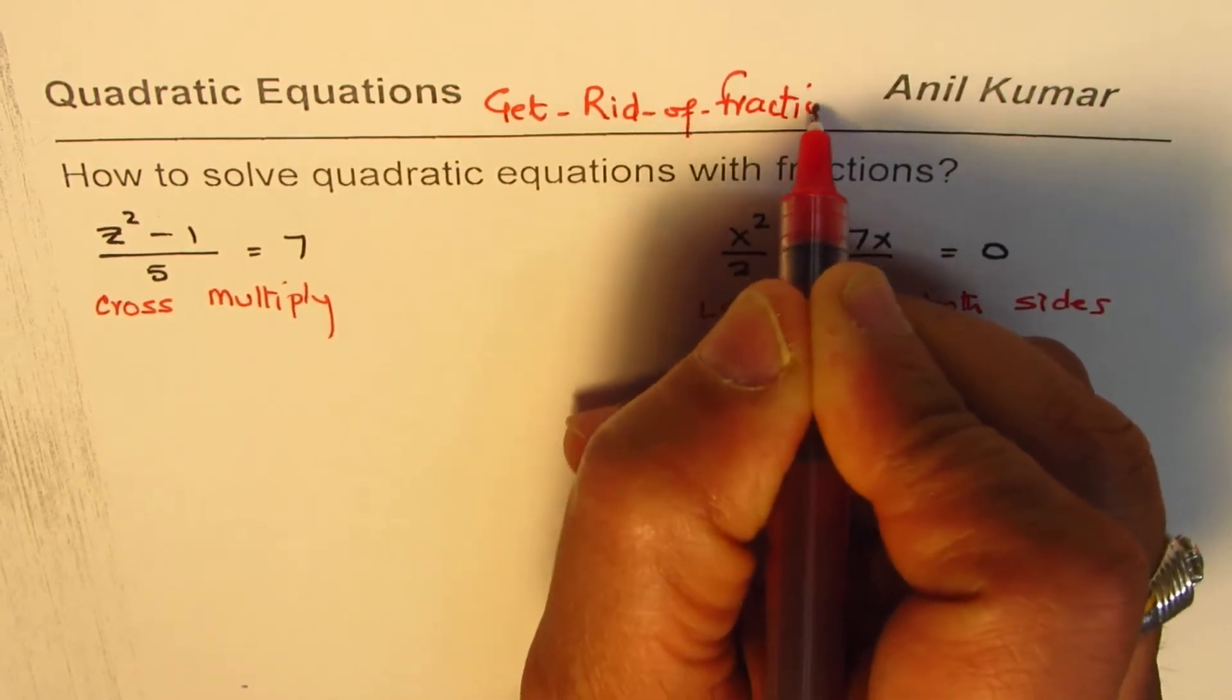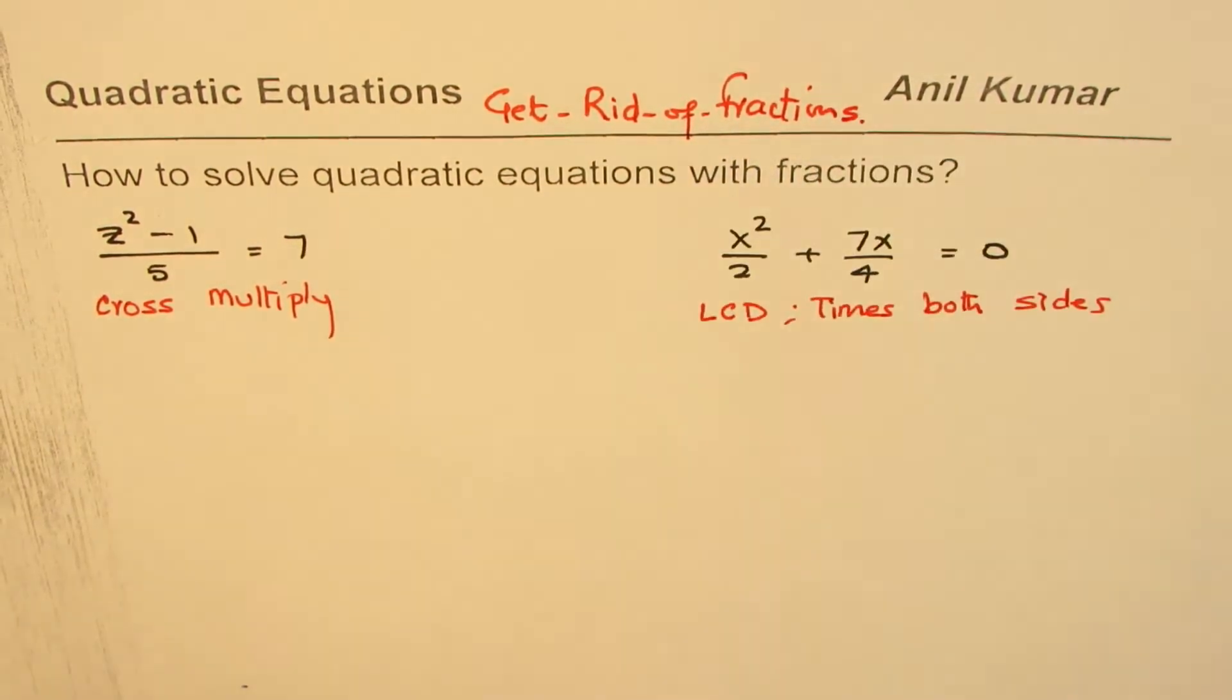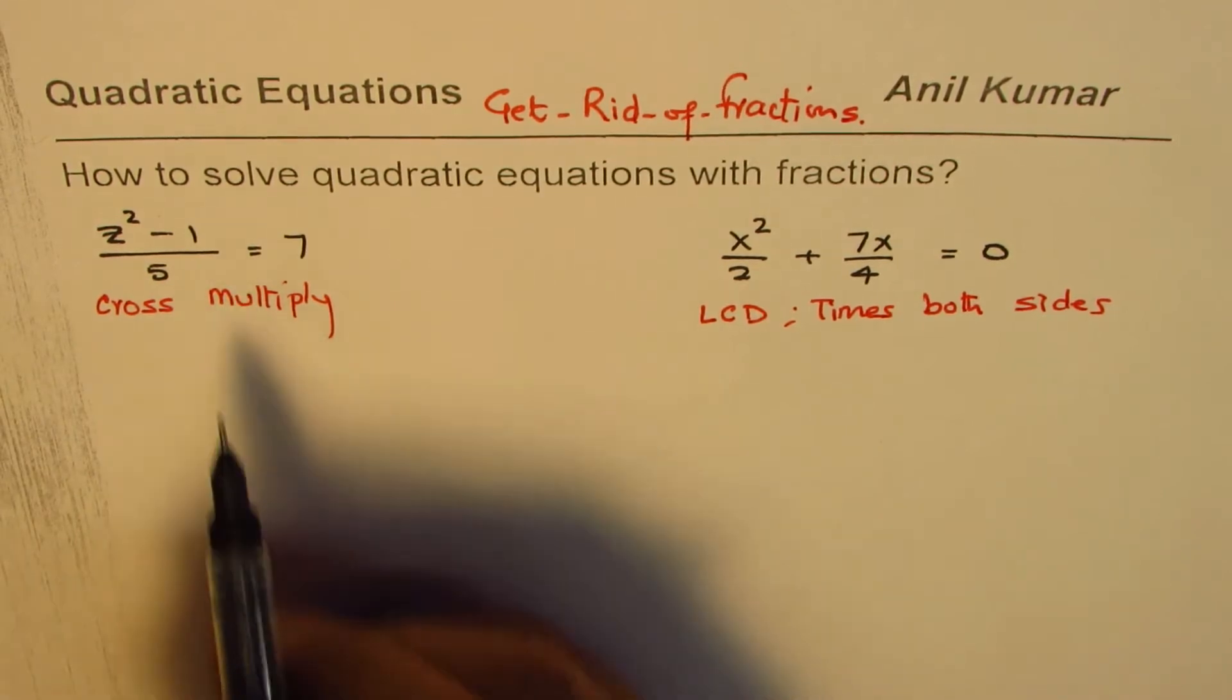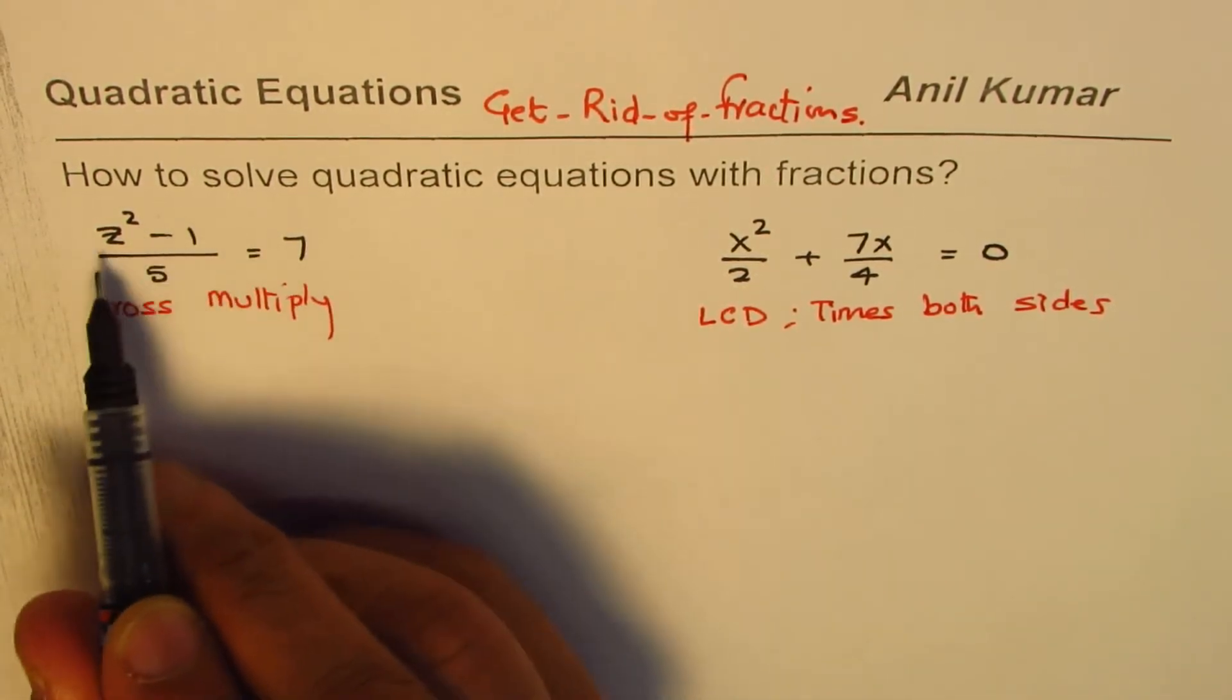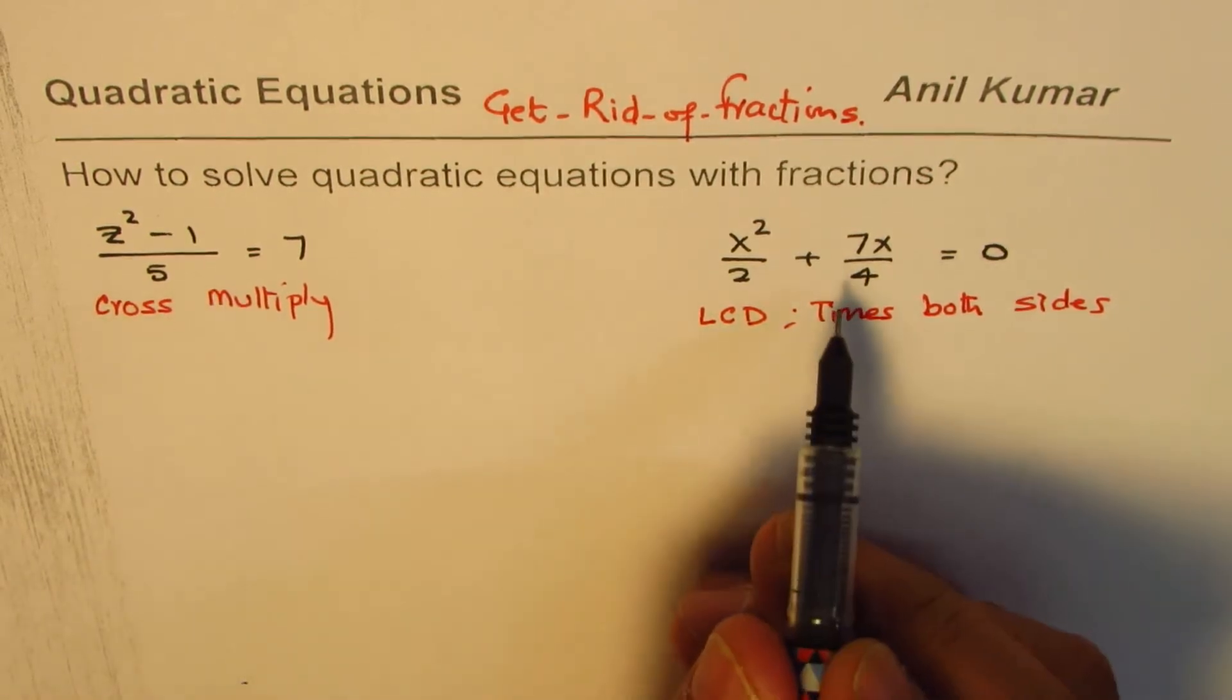So the basic approach here is to get rid of fractions. That is the basic approach. And both these strategies help us to meet the criteria. So if you cross multiply, which can be done in such an example, it cannot be really done here.